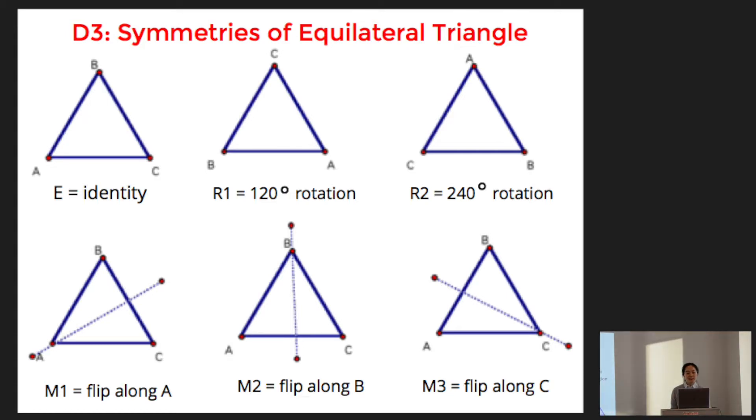And this satisfies the group axioms. There's the identity permutation, which does nothing. And each element composed with another element gives you back another element of this group. Because of the way we defined this group, this group consists of every possible way that you can move a triangle without changing its orientation. So if you perform one symmetry on a triangle, and then you perform another symmetry on a triangle, the result is still a symmetry on a triangle. Hence, you have closure.